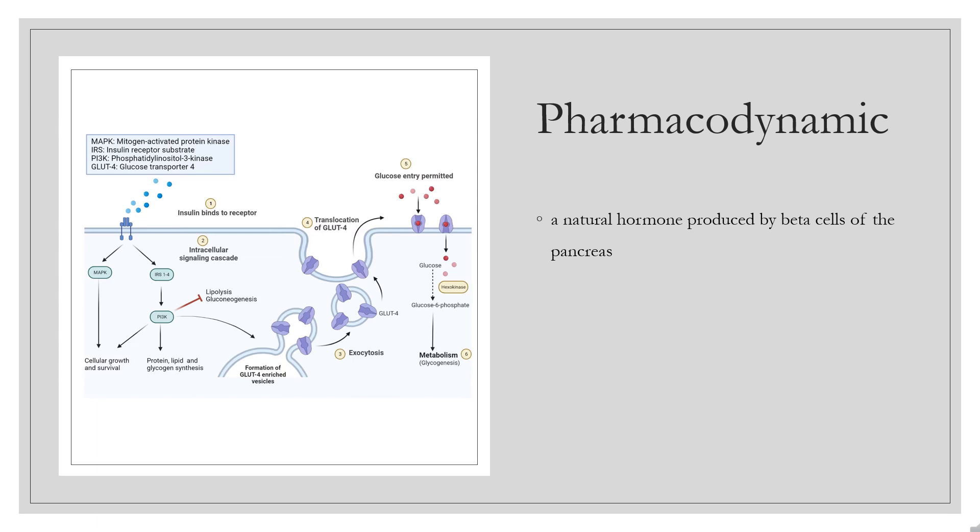Insulin also promotes growth and is required for the actions of growth hormone, such as protein synthesis, cell division, and DNA synthesis. Insulin detemir is a long-acting insulin analog with a flat and predictable action profile. It is used to mimic the basal levels of insulin in diabetic individuals. The onset of action is 1 to 2 hours and its duration of action is up to 24 hours.